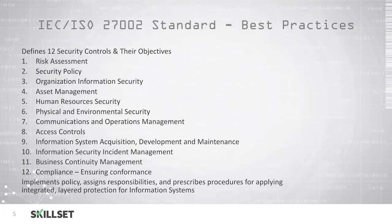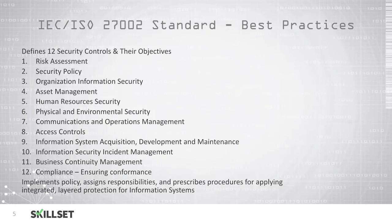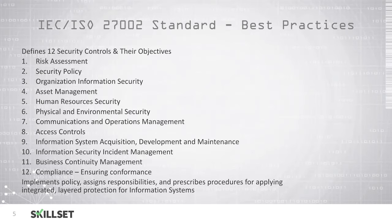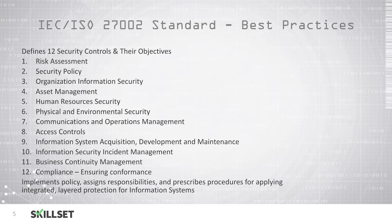The ISO IEC 27002 standard defines 12 different security controls and their objectives. These controls include risk assessment, human resources security, access controls, and business continuity management. The goal here is to implement policies, assign responsibilities, and describe procedures to provide layered protection for your information systems in order to avoid any security complications.